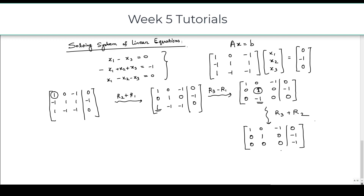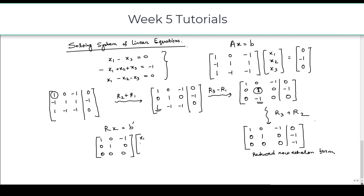We now have a matrix in reduced row echelon form. We write it as Rx equal to B prime, where R is: 1, 0, minus 1; 0, 1, 0; 0, 0, 0. And x is x1, x2, x3, and B prime is 0, minus 1, minus 1.